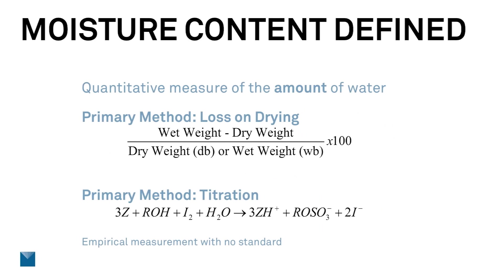Let's discuss moisture content. It is a quantitative measure of the amount of water — before we were talking about the energy status of water, moisture content is the straight amount. We have two primary methods. One is loss on drying: you take the wet weight of the sample and subtract the dry weight, then depending on which basis you use, you divide by either the dry weight for dry basis or wet weight for wet basis. It's important that you know which basis you're using because each gives a different answer since you are dividing by different weights.